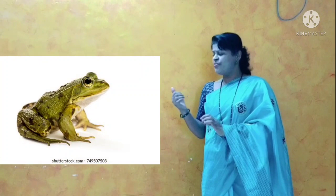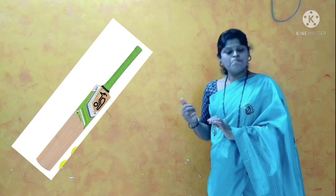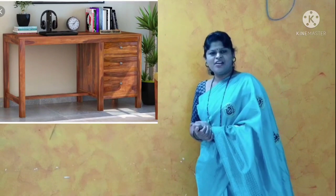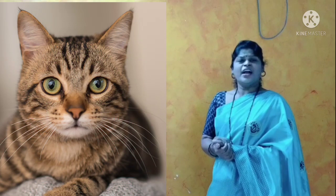Rhyming words — do you know? Yes! Look at the picture. Clap — clap means tadi. Frog. Ball. Cable. Bat. Tap. Table. Able. Cat. Doll. Dog.